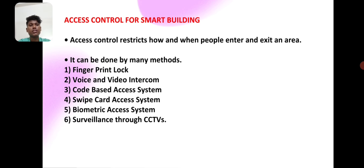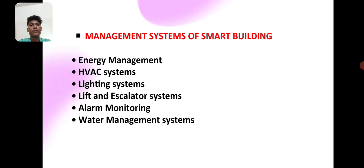The management systems of a smart building include: energy management, HVAC system, lighting system, soft and skeletal system, alarm monitoring, and water management system.